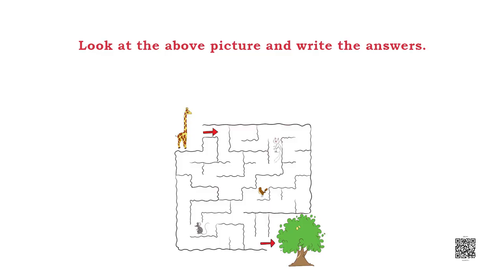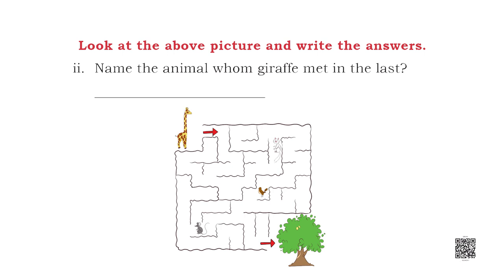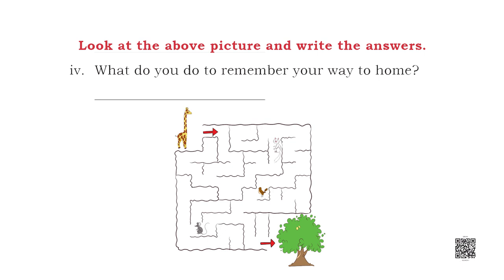Look at the above picture and write the answers. One: Name the animal whom the giraffe met first on the path. The first animal was cat. Two: Name the animal whom the giraffe met in the last. You answer now — look at that path and write your answer. Three: Have you ever lost your way to home? Answer in the blank space given. Four: What do you do to remember your way to home? Write your answer in the given space.